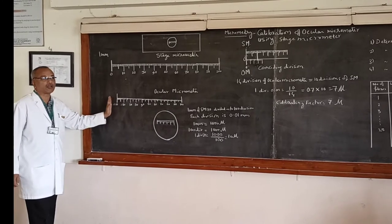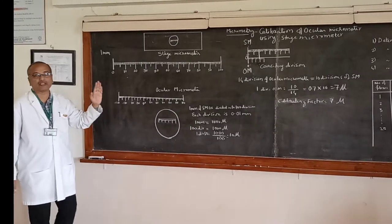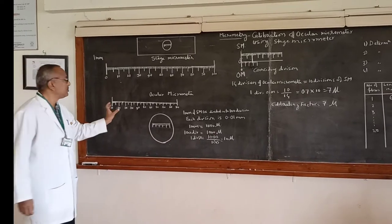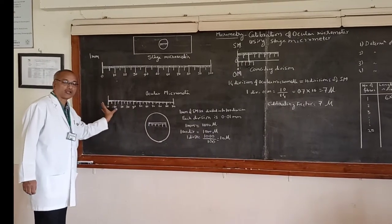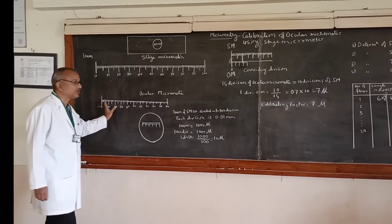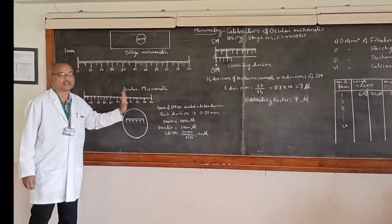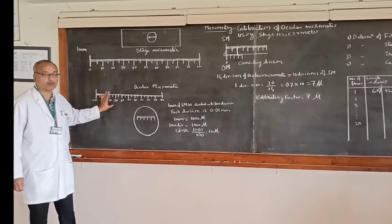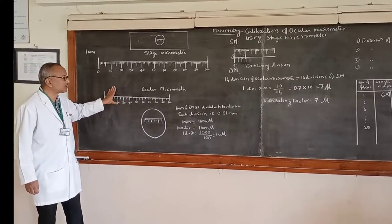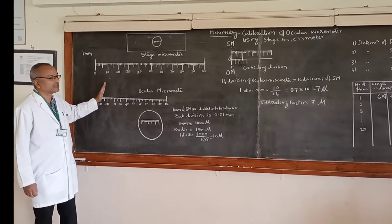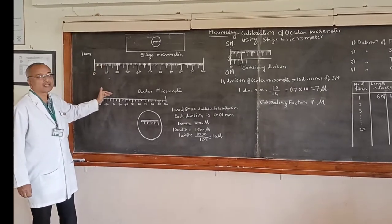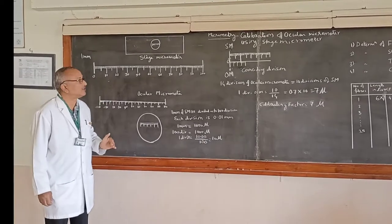The ocular micrometer, which we use for measuring fiber beams or charges, does not have any units. It is divided into 100 divisions, but those divisions have no unit value. For that purpose, we have to standardize or calibrate this ocular micrometer, and in this method, we use the stage micrometer for the calibration of the ocular micrometer.